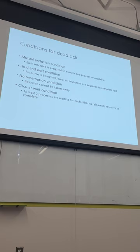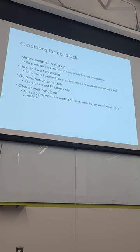Third condition: resources cannot be preempted. If someone could forcibly take the fork from your hand, that person gets both forks, eats, puts them down, and the cycle continues. Fourth: circular wait — at least two processes are waiting on each other to release resources. You need all four conditions for deadlock; if any one is missing, deadlock won't occur.